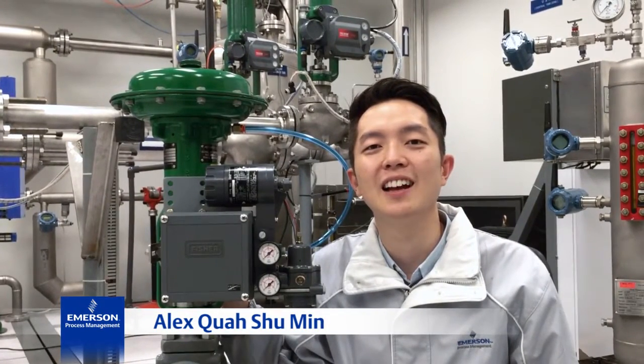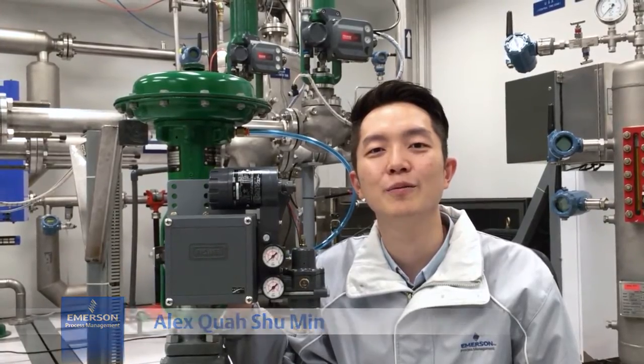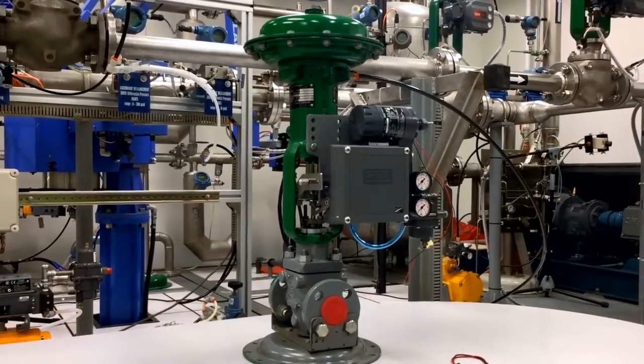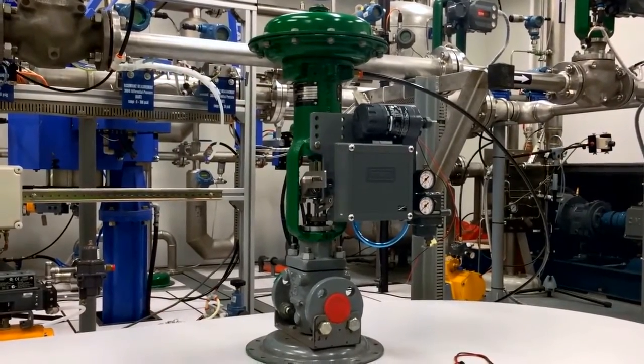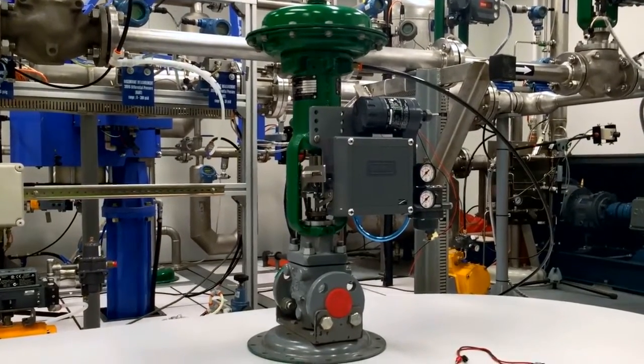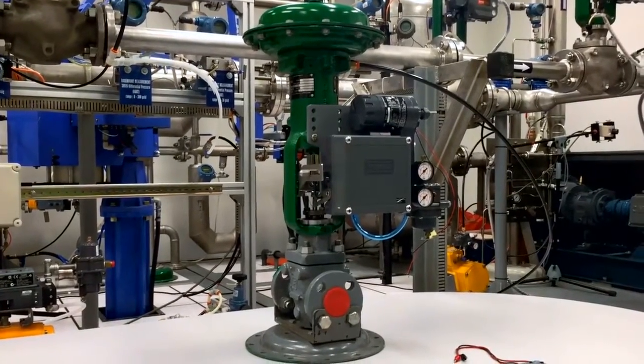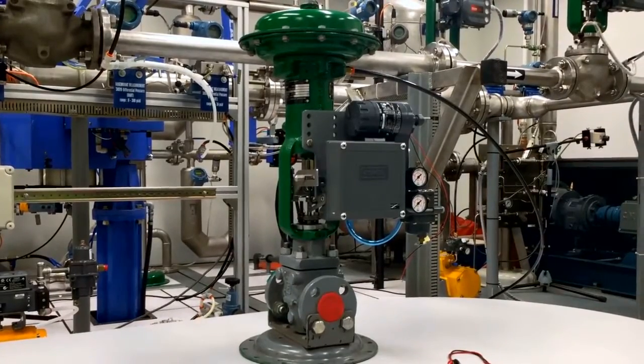Hi, my name is Alex and I'm a marketing engineer from Fisher. In this video we will be demonstrating the setup and calibration of the 3582i on a Fisher 667 size 30 actuator. The 3582i is an electric pneumatic valve positioner which takes a 4 to 20 input signal and positions the valve accordingly.